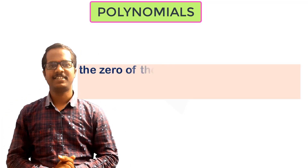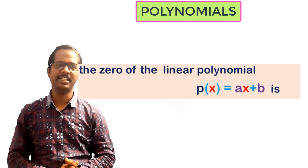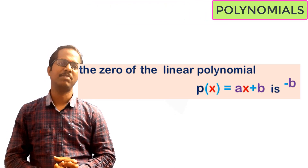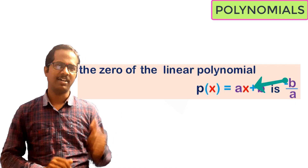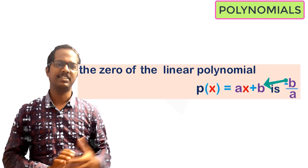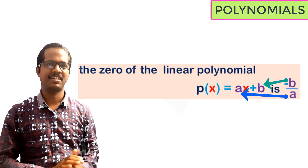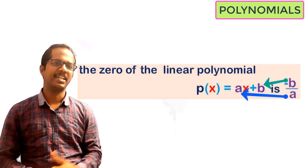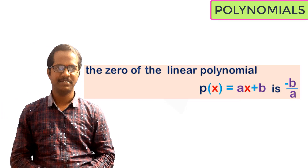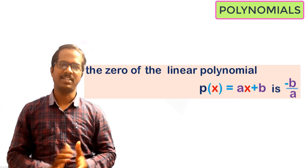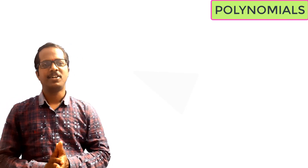As we all know, the zero of a linear polynomial ax + b is -b/a. Here, b is the constant term and a is the x-coefficient. By doing minus constant term divided by x-coefficient, we get the zero of the linear polynomial of the form ax + b. Similarly, let us explore whether there is any relation between the coefficients of a quadratic polynomial and its zeros.